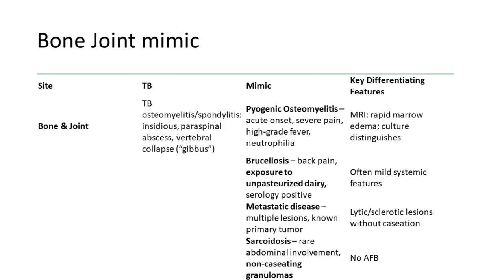For bone and joint mimics: TB osteomyelitis or spondylitis has a very slow onset — months of back pain leading to a gibbous deformity. Pyogenic osteomyelitis has acute onset, severe tenderness, neutrophilia, and high-grade fever; MRI can help distinguish. Brucellosis also causes back pain and presents as PUO with hepatosplenomegaly and a history of unpasteurized dairy exposure. Metastatic disease shows a primary tumor or hepatosplenomegaly elsewhere. Sarcoid is rare in children and is associated with hepatosplenomegaly.